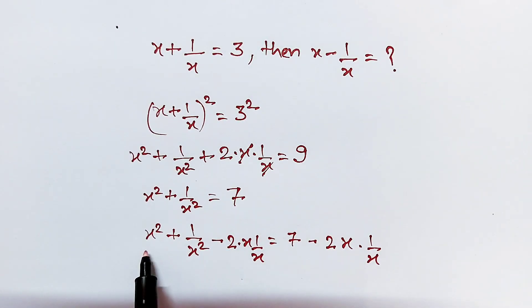If you closely look at this expression, this is the formula of a minus b whole square, where a square plus b square minus 2 times a times b. So converting this into a formula, what I get is x minus 1 over x.